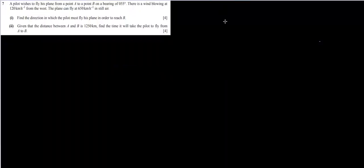In this question number 7, they are saying that a pilot wants to reach a point B from point A which is at a bearing of 055 degrees.